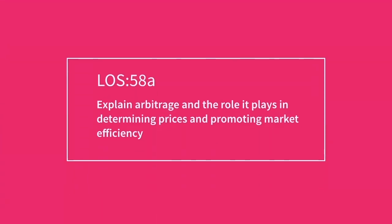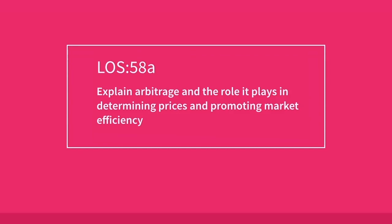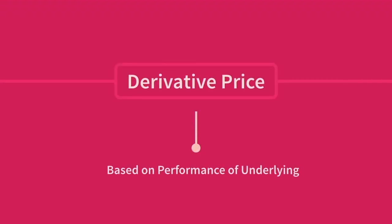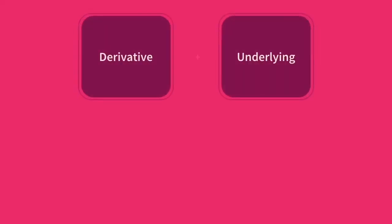Explain arbitrage and the role it plays in determining prices and promoting market efficiency. By definition, the price of a derivative contract is based on the performance of its underlying. Given that, by combining a derivative and the underlying into a single portfolio, you produce a perfect hedge with zero risk.